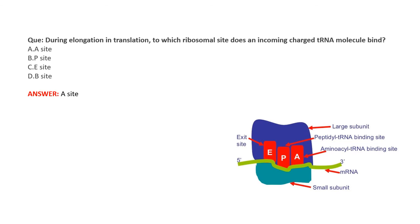The last question: during elongation in translation, to which ribosomal site does an incoming charged tRNA molecule bind? There are three sites — the A site (aminoacyl tRNA binding site), the P site (polypeptidyl tRNA binding site), and the E site (exit site). The correct answer is the A site. At the P site, the amino acid is added to the polypeptide, and the leftover tRNA exits from the E site.